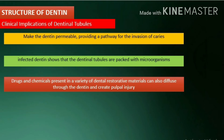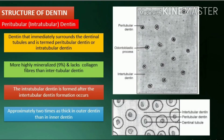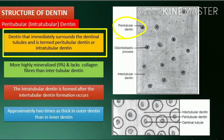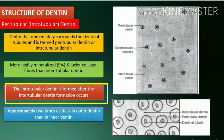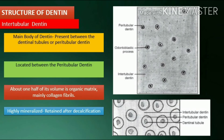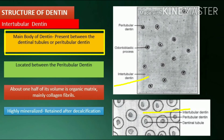Peritubular or intratubular dentin: a cross section of the dentinal tubules viewed in a ground section shows the dentin that immediately surrounds the dentinal tubules, termed peritubular or intratubular dentin. It is more highly mineralized and lacks collagen fibers compared to intertubular dentin. Intratubular dentin is formed after intertubular dentin and is approximately two times as thick in outer dentin than in inner dentin.